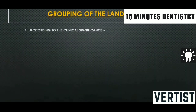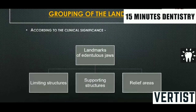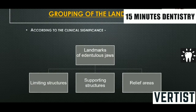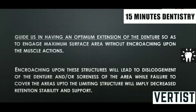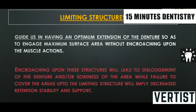Landmarks are broadly classified into three categories: limiting structures, which limit the extension or borders of the denture; supporting structures, which take up the load of the prosthesis; and relief areas, which overlie important anatomical structures like nerves and vessels that need to be relieved. Limiting structures guide us in having optimum extension of the denture.